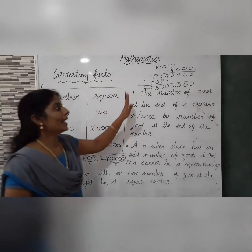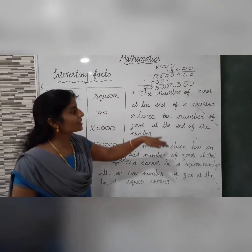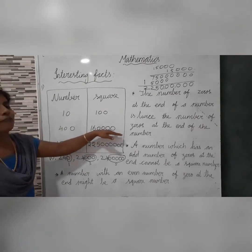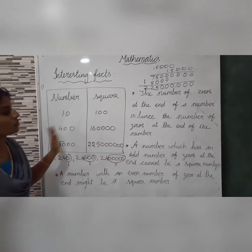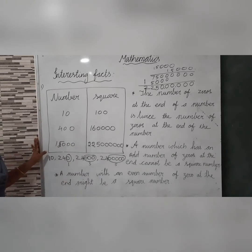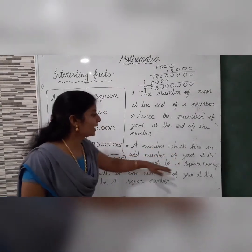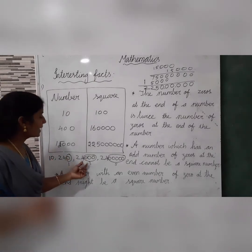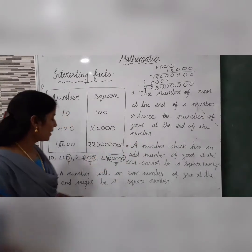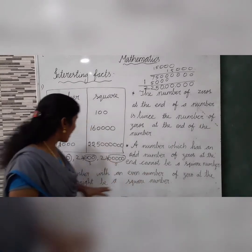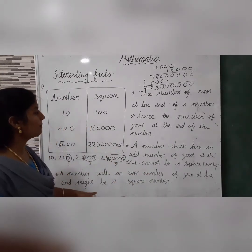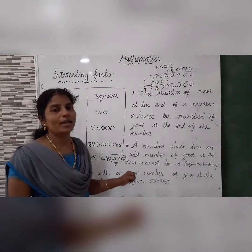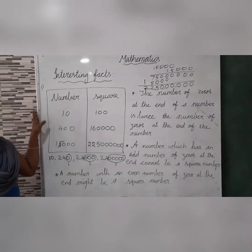Let me recap the three facts. First: the number of zeros at the end of a square is twice the zeros in the original number — 1 zero gives 2, 2 zeros give 4, 3 zeros give 6. Second: odd number of zeros at the end means it cannot be a square number. Third: a number with an even number of zeros at the end might be a square number.